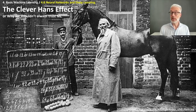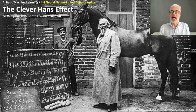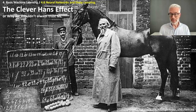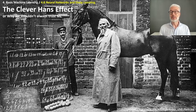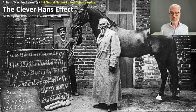This would be quite impressive for a horse. Von Osten traveled the country with Hans, asking questions either orally or shown on a blackboard. For example, he asked: if the eighth day of the month comes on a Tuesday, what is the date of the following Friday? Hans the horse would answer by tapping his hoof 11 times — fascinating.